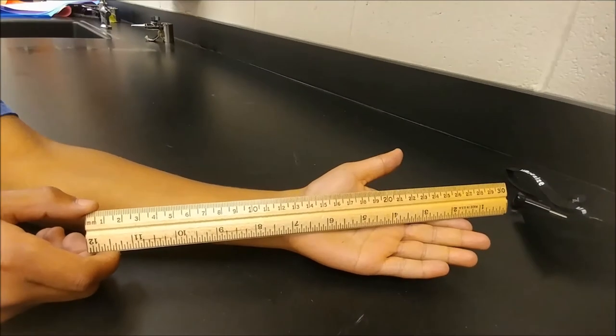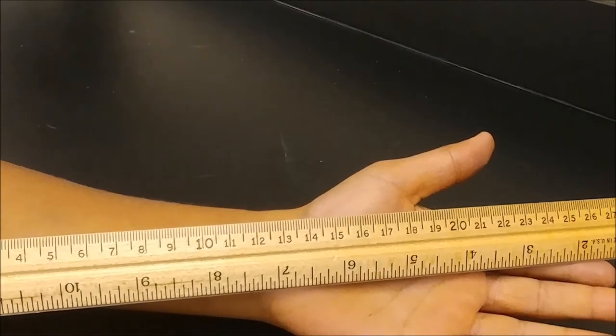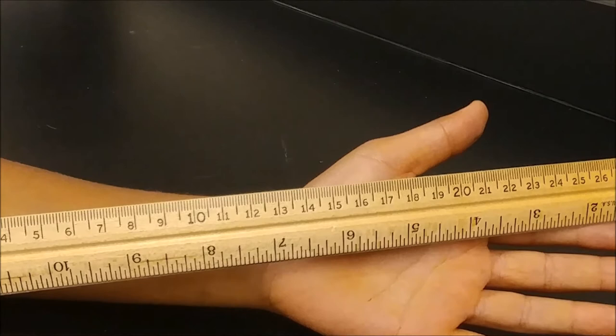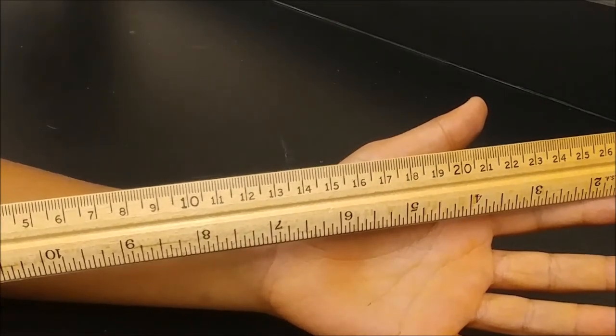Another way you can tell is by looking closely at the units. Most scientific tools have the units written somewhere on it. Here we can see the letters MM.